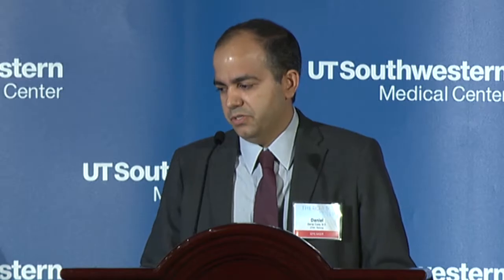In which patients should you consider ordering an MRI of the prostate? The main group is patients with suspected prostate cancer — those with elevated or rising PSA or abnormal digital rectal exam. MRI became extremely popular for patients in this context who had already had a TRUS biopsy that was negative. These patients would get an MRI, and then a targeted biopsy if the MRI showed a suspicious area.